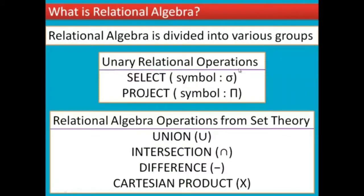Relational algebra is divided into various groups. First, Unary Relational Operations: SELECT with symbol sigma, and PROJECT with symbol pi. Next, Relational Algebra Operations from Set Theory: UNION, INTERSECTION, DIFFERENCE, and CARTESIAN PRODUCT. These are the two types divided into Unary Relational Operators and Set Theory with four types of set operations.